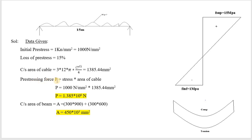Pre-stressing force: P = stress × area of cable = 1000 N/mm² × 1385.44 mm² = 1.385 × 10⁶ N. Next, calculate the cross-sectional area of the beam — be careful not to confuse area of the cable with area of the beam.